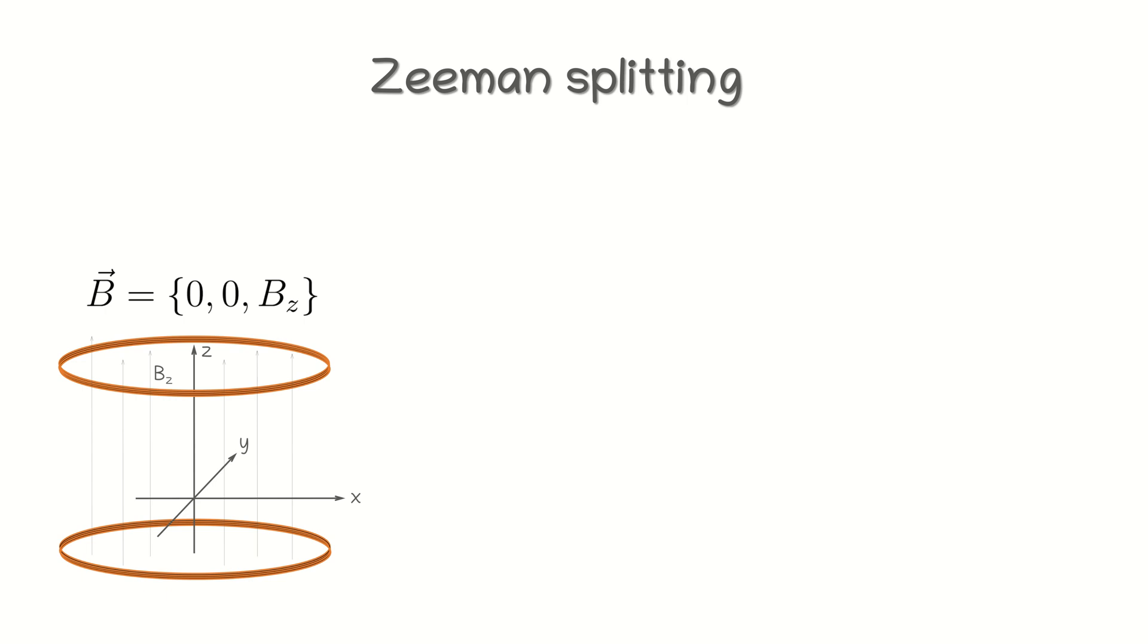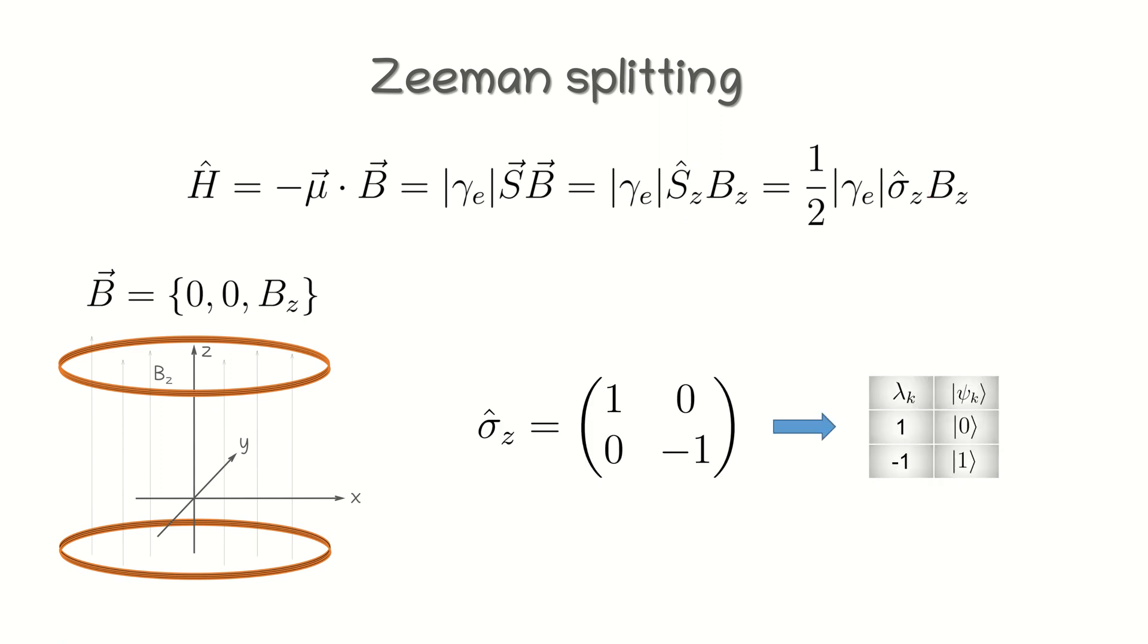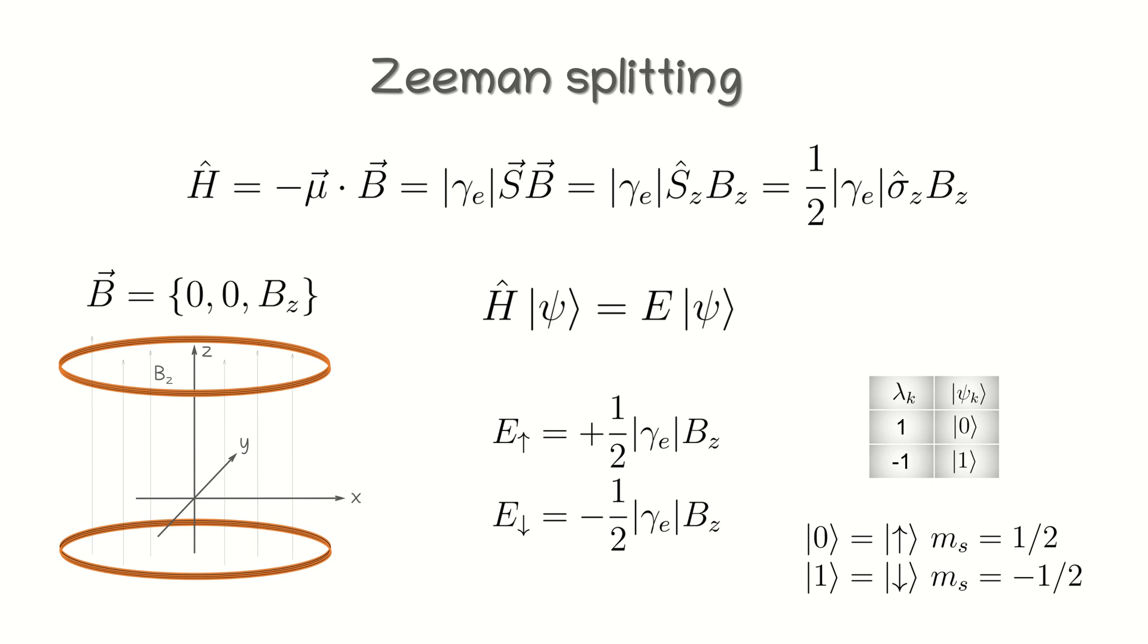We place the electron spin under the uniform magnetic field oriented along the z-axis. Recall the Hamiltonian describing the interaction of the spin-half system with the magnetic field. Since the magnetic field is applied along the z-axis, we have also the z-component of the spin, which is one-half times sigma z, the corresponding Pauli matrix. Sigma z has two eigenstates, which correspond to spin-up and spin-down states, and two eigenvalues, one and minus one. We denote spin-up state as ket zero and spin-down state as ket one. Since the Pauli-z matrix and our Hamiltonian differ just by a multiplicative constant, they obviously commute. Therefore, its eigenstates are also energy eigenstates and we immediately get the corresponding energy eigenvalues.